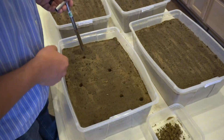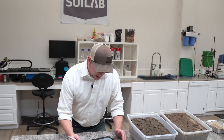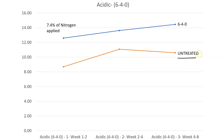We're going to start off with our acidic soil and the 6-4-0 fertilizer. You'll notice we've got two lines on the graph — one is untreated and one showing the nitrogen release of that fertilizer. The untreated control was treated exactly the same except it didn't receive any fertilizer. At week two, a little over 7% of the total nitrogen applied was made available to our plant. Through weeks four and eight we saw significant increases — a nice linear sloping curve showing enhanced release over time, which is ultimately what I would expect.